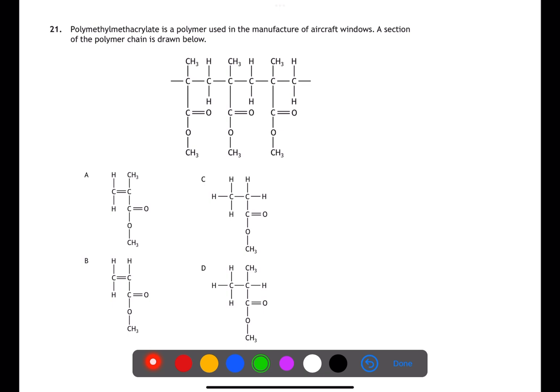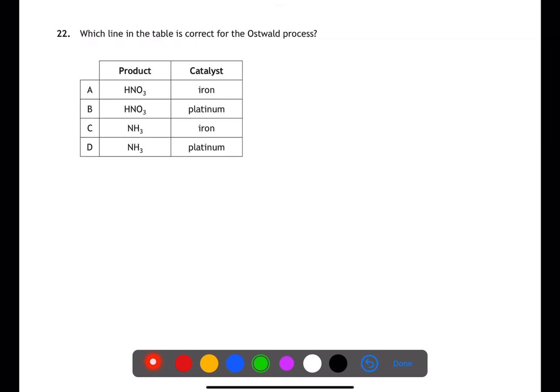In question 21, we've been given a section of polymer and need to work out the monomer. To do this, find the repeating unit of the polymer and then reinsert the double bond. Looking at the answers, they all start with the carbon with two hydrogens. The repeating unit is the section of two carbons which would allow us to draw out the monomer. The monomer needs a carbon-to-carbon double bond, so we can eliminate C and D. A has the CH3 group on the right-hand carbon, which is required, so A is the monomer. The Oswald process is used to produce nitric acid HNO3, and the catalyst used is platinum.